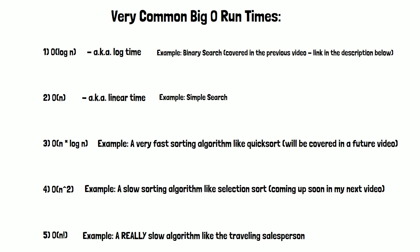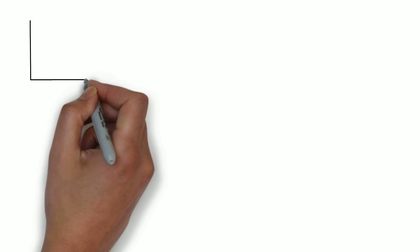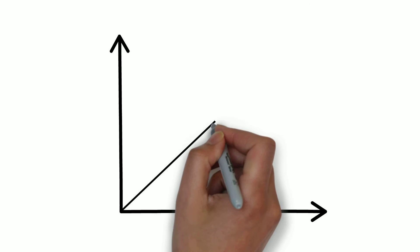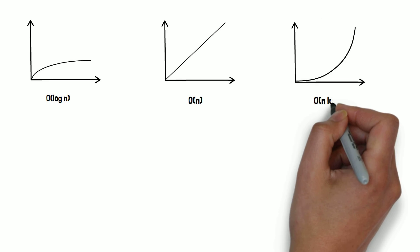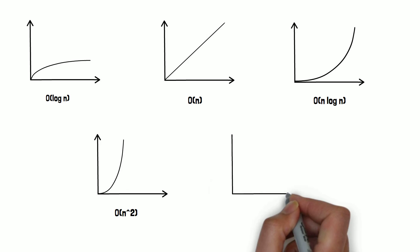Now, let's see a visual representation of the runtimes. As you can see, it is very important to focus on how the algorithm's speed grows as the number of elements gets larger.